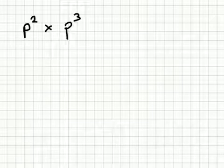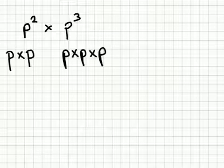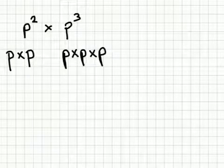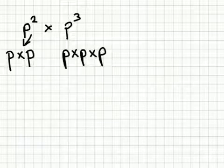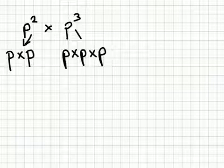Here we have p to the power 2 multiplied by p to the power 3. What this really means is this: p squared, or p to the power 2, means p times p, and p cubed, or p to the power 3, is p times p times p.